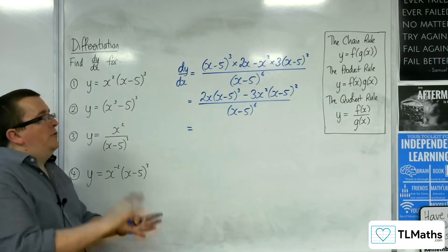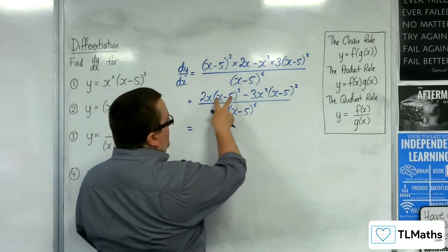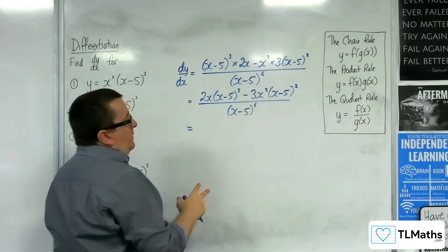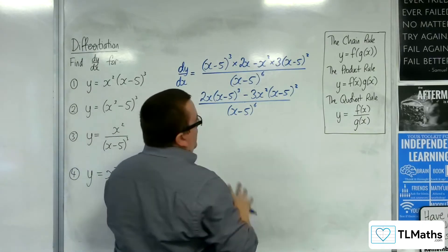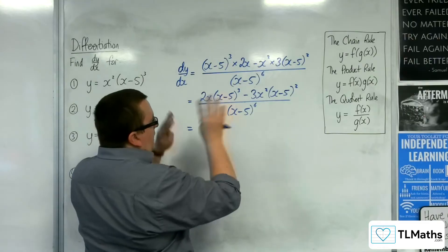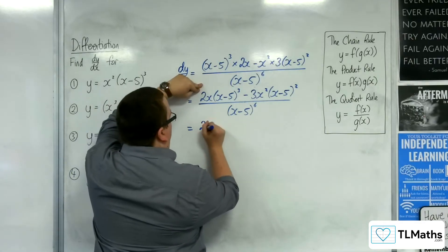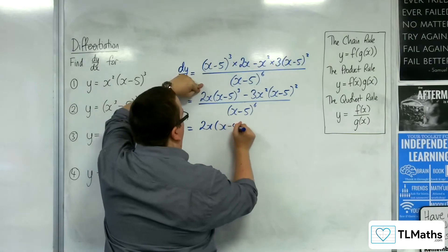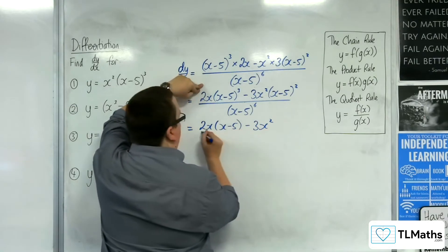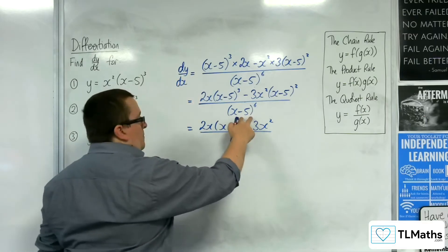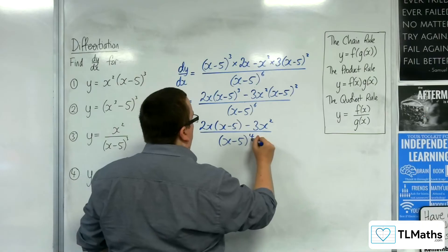Tidying up: 2x(x minus 5) cubed minus 3x squared(x minus 5) squared, all over (x minus 5) to the 6. We've got a factor of (x minus 5) squared in the numerator and denominator, so we can cancel through, leaving 2x(x minus 5) minus 3x squared all over (x minus 5) to the 4.